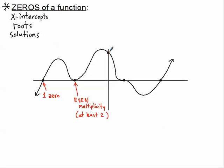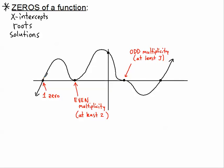Moving on, there's a y-intercept here which is irrelevant today. Then we get to another interaction — different from going straight through or being tangent. I like to call this one wiggling through the x-axis. This is an odd multiplicity, which means there must be an odd number of zeros there — at least three, since we already know what one looks like (it just goes straight through). An odd multiplicity is some sort of a wiggle right through the x-axis.